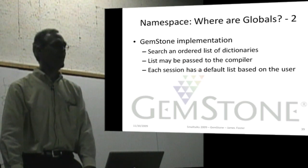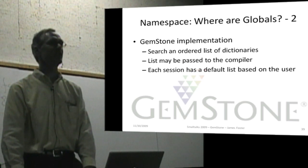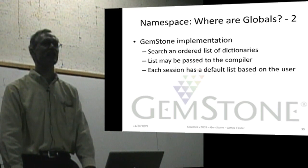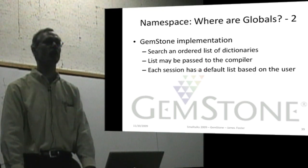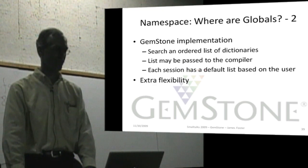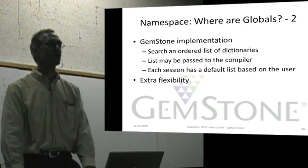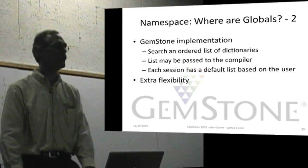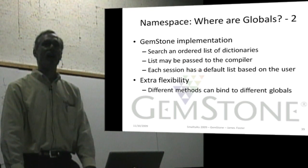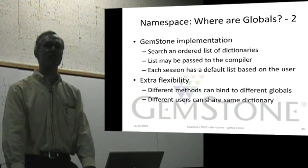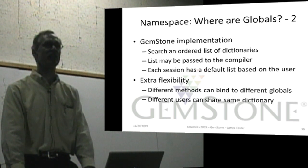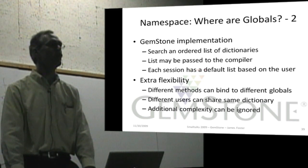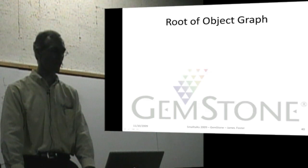Each session has a default, and the default is assigned when the user logs in. So each user has a default list of globals that are visible to that user. There's extra flexibility because different methods can be compiled to reference different globals. But users can share these dictionaries, so one particular dictionary can be shared amongst multiple users. And so you can ignore the complexity by just accepting the default arrangement.